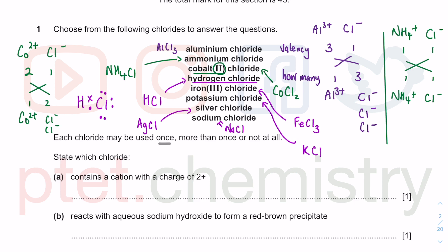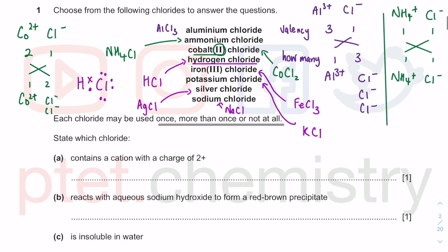Each chloride may be used once, more than once, or not at all. Typical of a first question in this particular paper - it's usually a list. Now, state which chloride contains a cation with a charge of 2+. Cation means positively charged ions, and we're looking at something with 2+ charge.